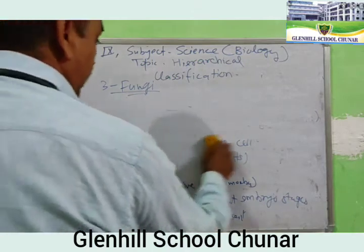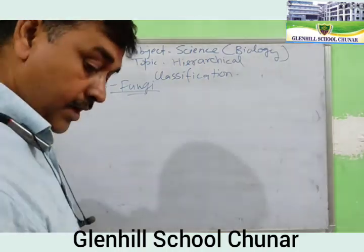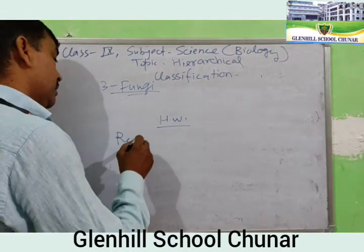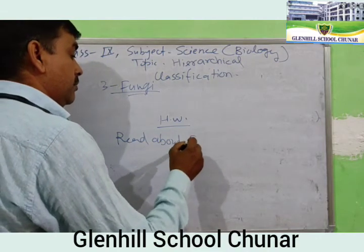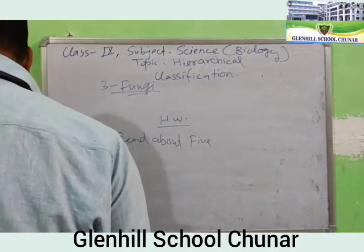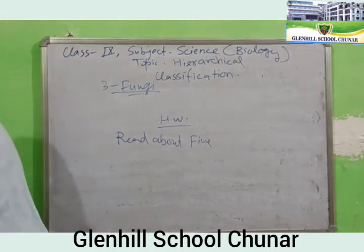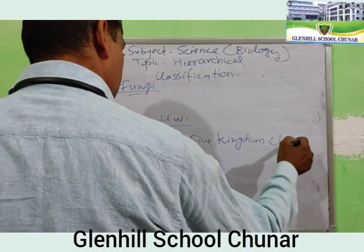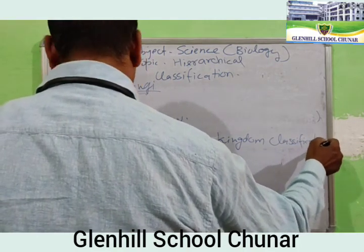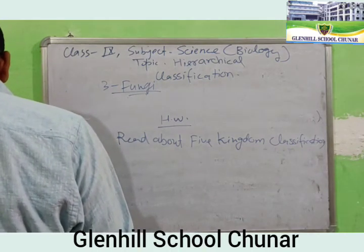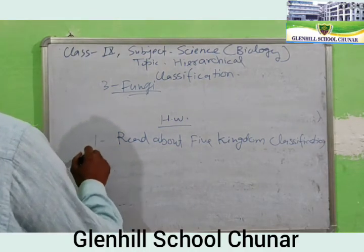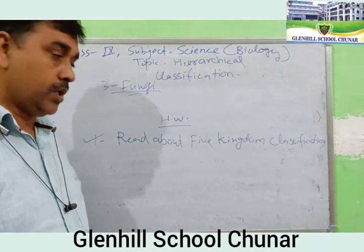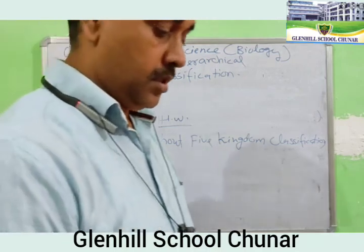Fungi, Plantae, and Animalia will be discussed in the next online classes. Today's homework: read about the five kingdoms. In today's class we discussed the features of Monera and Protista. Students, thank you — write down your homework in your diary.